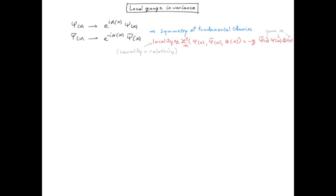So let's first check if the Dirac Lagrangian is local gauge invariant. Now the covariant derivative acts on alpha because it is a function of space-time.